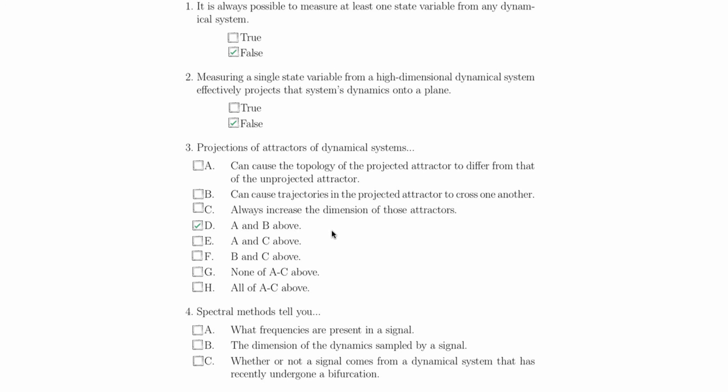Question 4 asks, what do spectral methods tell you? They tell you the frequencies that are present in a signal. Spectral methods do not tell you the dimension of the dynamical system, and they do not tell you whether the system has recently undergone a bifurcation.